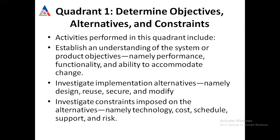In the first quadrant, we establish an understanding of the system by highlighting the objectives of the software. These objectives include: performance — the software should give results in least time; functionality — what various functions the software performs; and ability to accommodate changes — whenever changes are required, they can easily be done. These are the main indicators of good software.